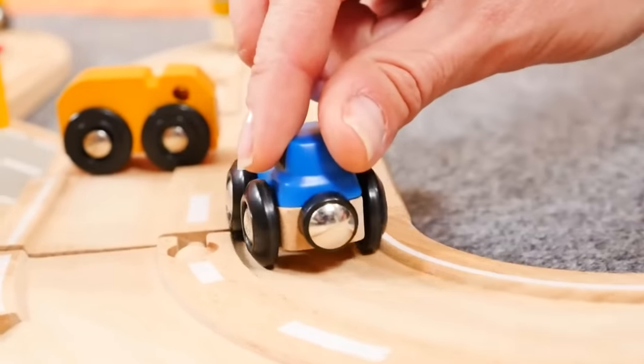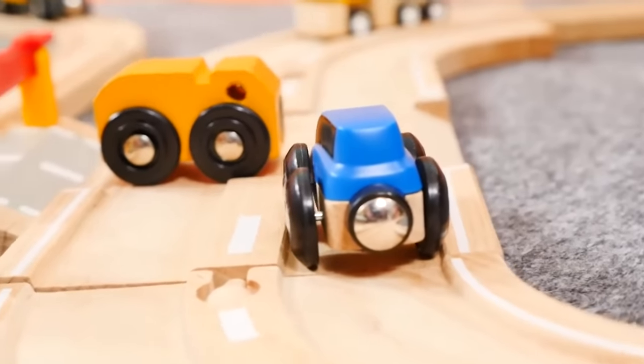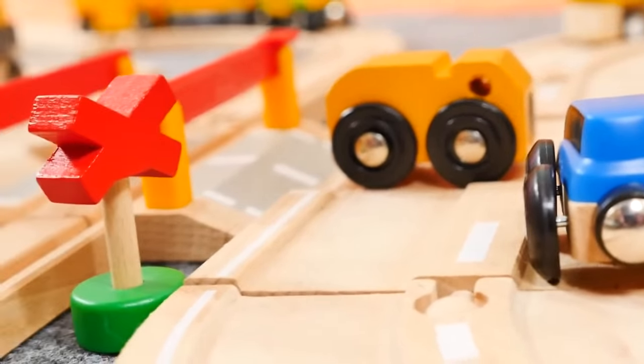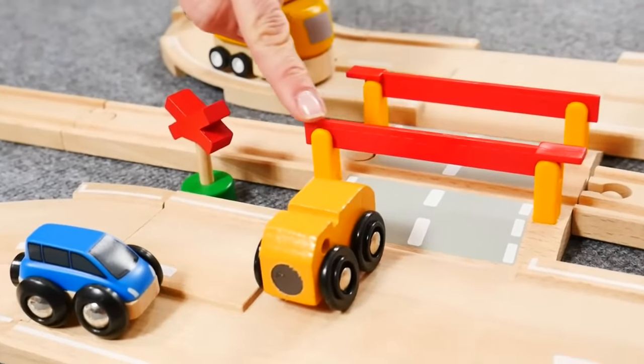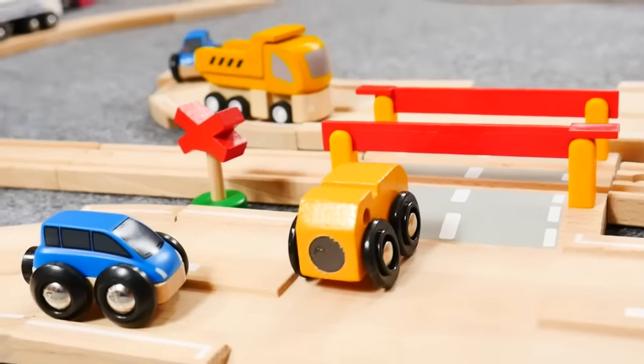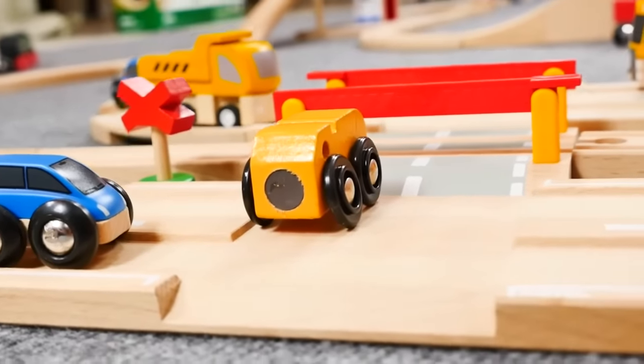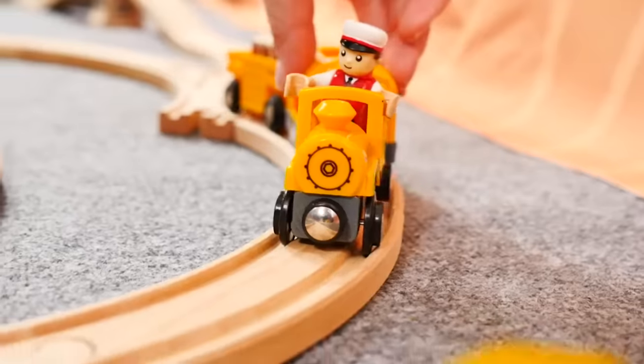But why have these two little cars stopped? Because of this - it is a train barrier. The barrier is closed, and that means a train is coming along the train tracks. Here it comes.